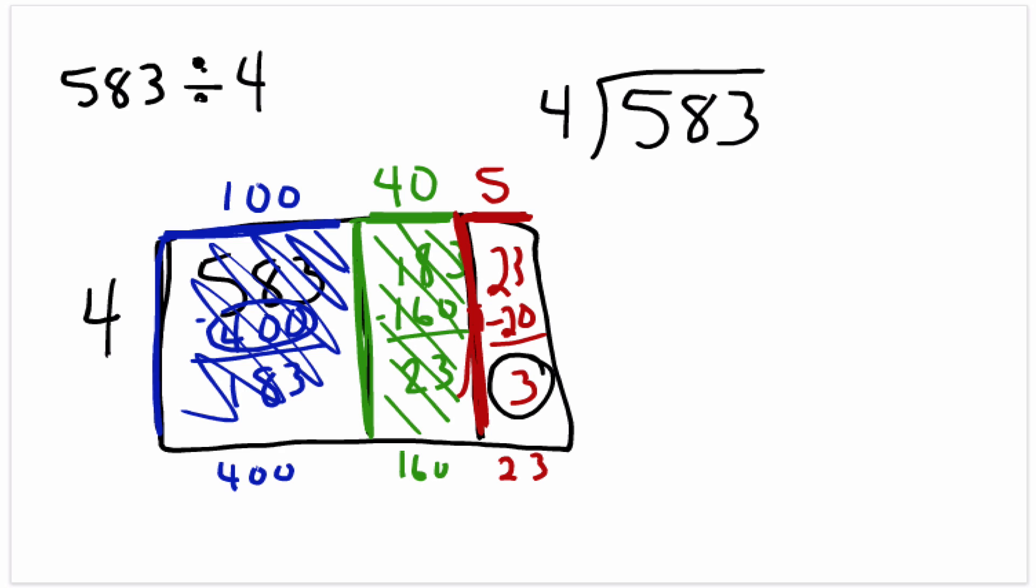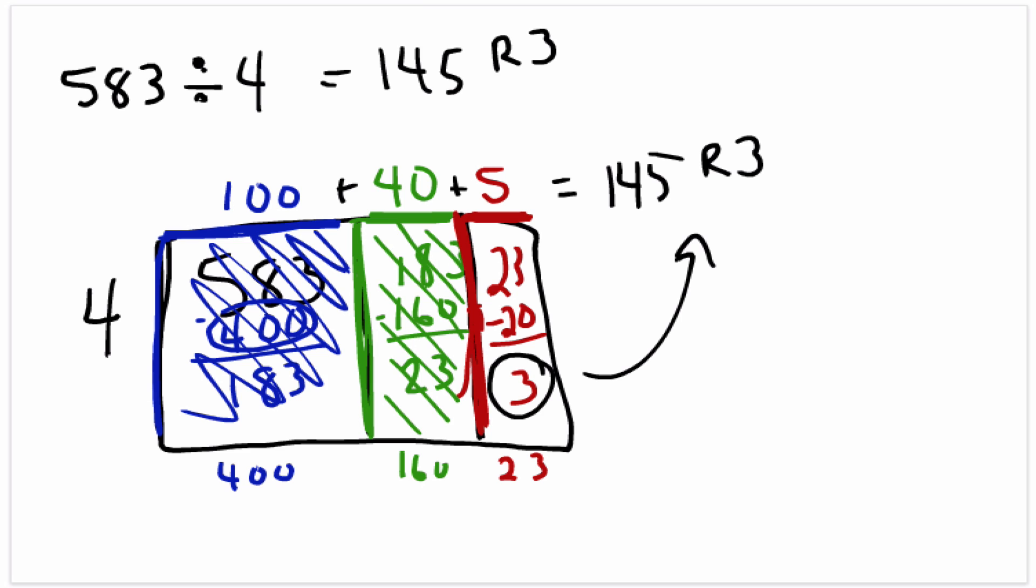So sure enough, that tells us that the answer to this question is we're going to add all of these up, and we get 145 with 3 units left over. So this answer is 145 remainder 3.